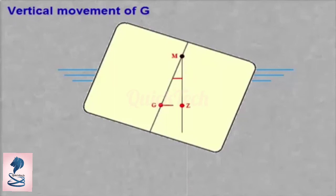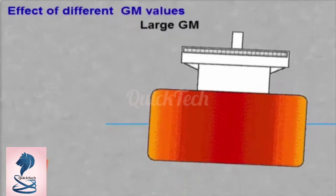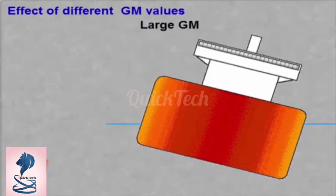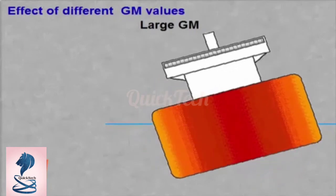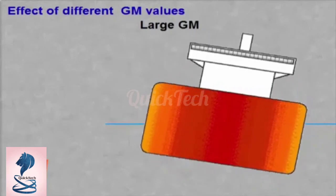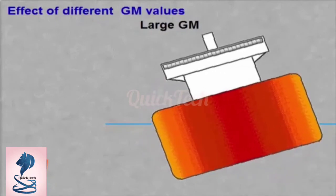If the ship has a large GM value, the ship will roll rapidly. The movements can be very rough. Cargo and equipment may become unlashed. In extreme conditions, much damage could be done to the ship and crew.